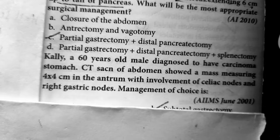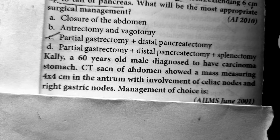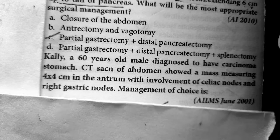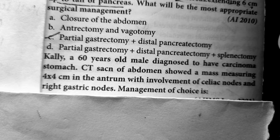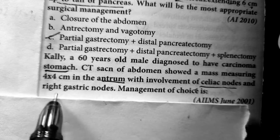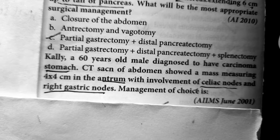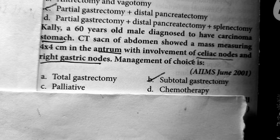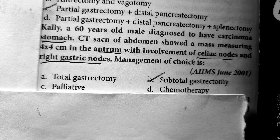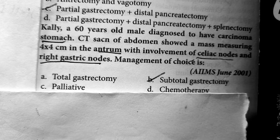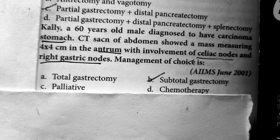Question 7: A 60-year-old male diagnosed with carcinoma of the stomach. CT scan of abdomen showed a mass measuring 4x4 cm in the antrum with involvement of celiac nodes and right gastric nodes. Management of choice: the patient has carcinoma of the stomach involving the antrum with celiac and right gastric node involvement. You should resect the tumor, so you are going to do a subtotal gastrectomy — not total gastrectomy, because the mass is involving the antrum, not the proximal part of the stomach. You should also do lymph node dissection, but subtotal gastrectomy is the answer.